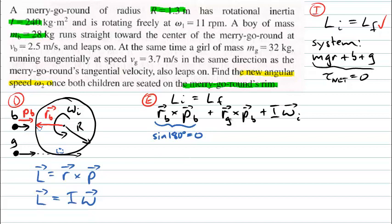The girl, on the other hand, has her radius vector at right angles to her motion. Her momentum vector is perpendicular to the radius, so the cross product involves sin(90°), which equals one. Her angular momentum is therefore simply the radius times the mass of the girl times her speed. Adding the merry-go-round's contribution, the initial angular momentum is: r × m_g × v_g plus the rotational inertia of the merry-go-round times its initial angular velocity.